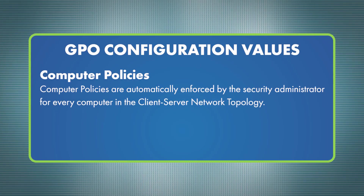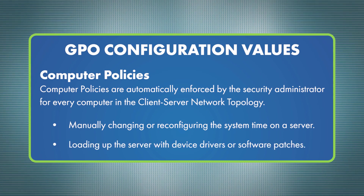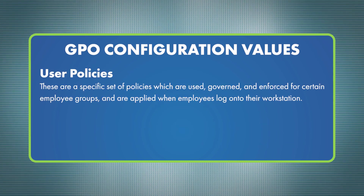Examples of user rights tasks include manually changing or reconfiguring the system time on a server and loading the server with device drivers or software patches. Two, user policies are a specific set of policies governed and enforced for certain employee groups, and are applied when employees log on to their workstation.